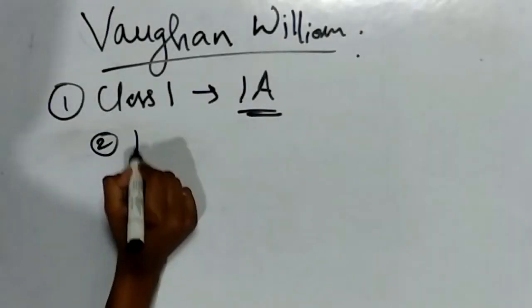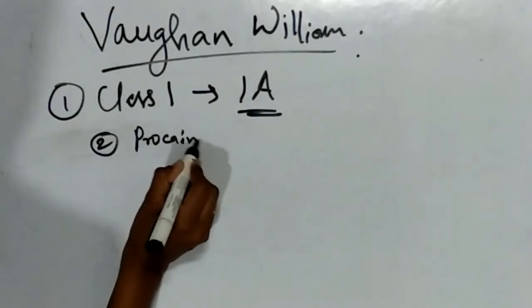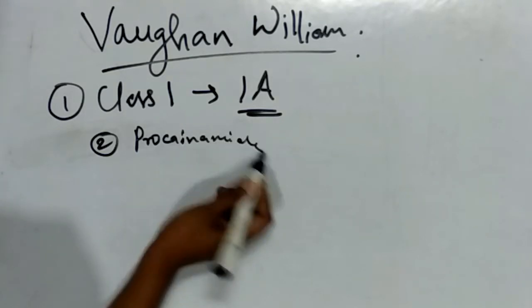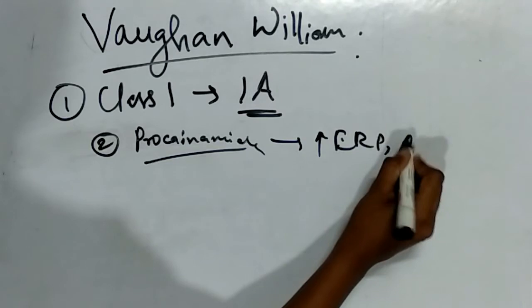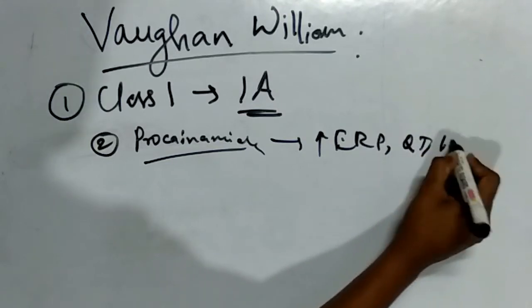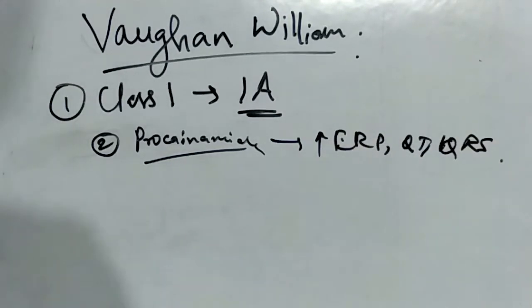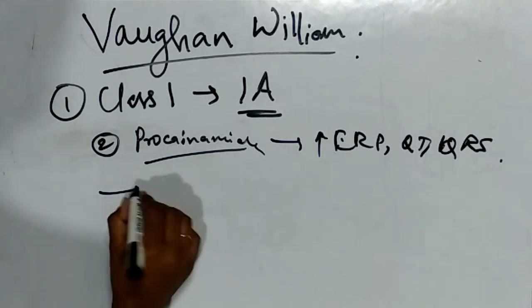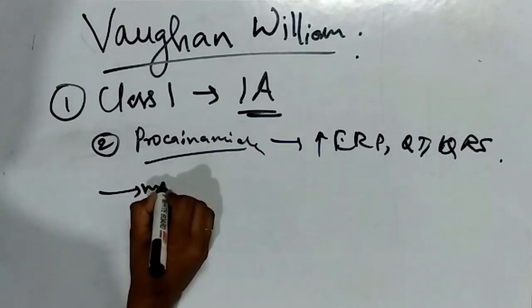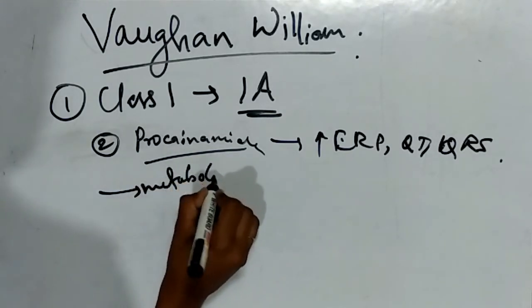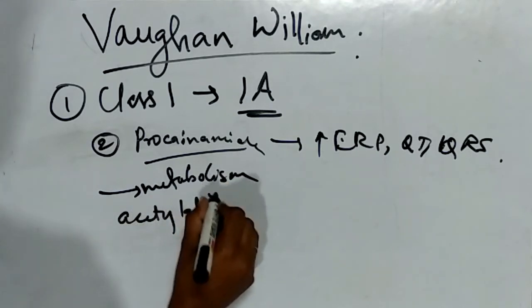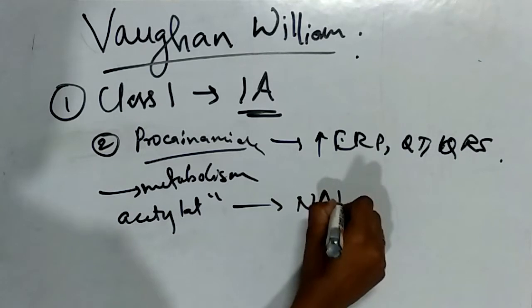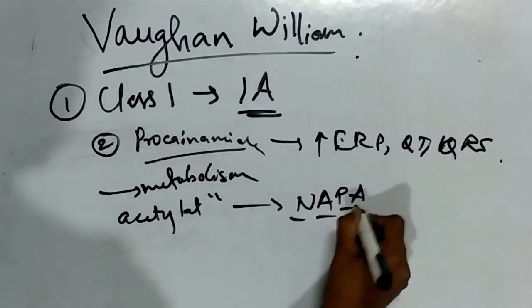The second drug is procainamide. Procainamide also increases ERP, QT, and QRS. The metabolism of this drug takes place by acetylation and the metabolite form is NAPA, N-acetylprocainamide.